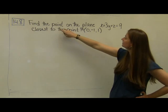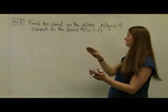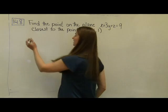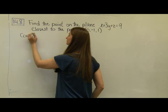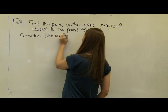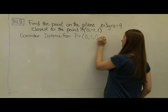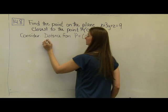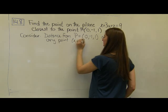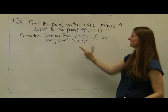In order to find the point on the plane that is closest to this point, 'closest' means that we want to minimize the distance between this point and the plane. So the function that we want to minimize is going to be a distance function. What is the distance from the point P equals 0, negative 1, 1, and any other point x, y, z?